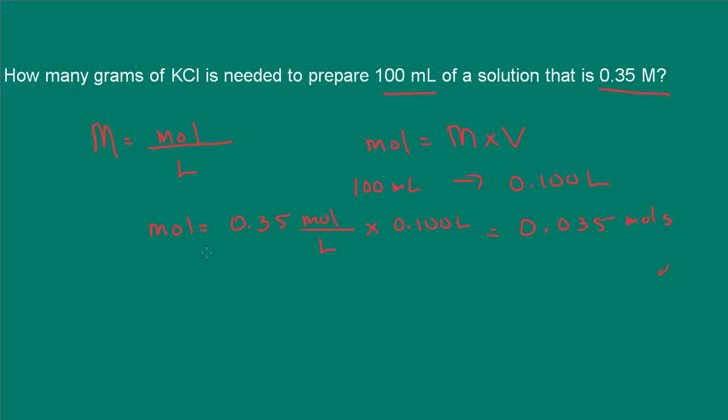So now all we have to do is convert moles to grams, because we're asked how many grams. So the molar mass of KCl, 1 mole of KCl, is equal to 74.5513 grams.